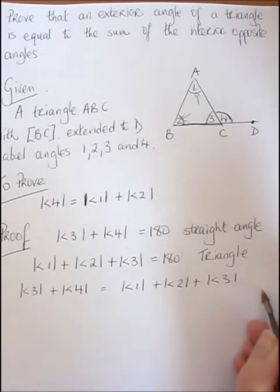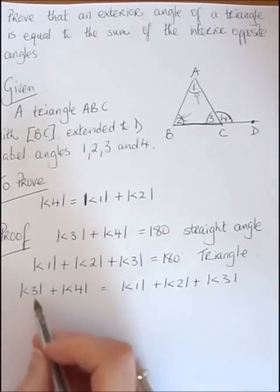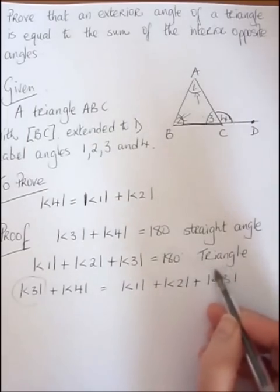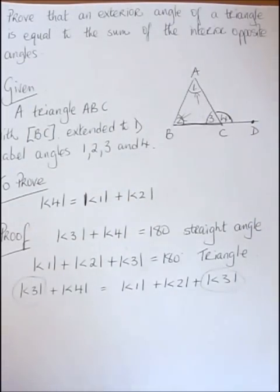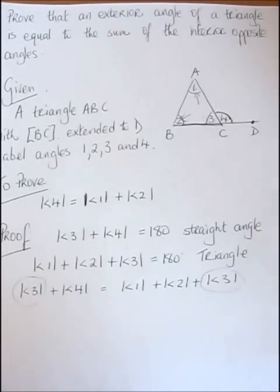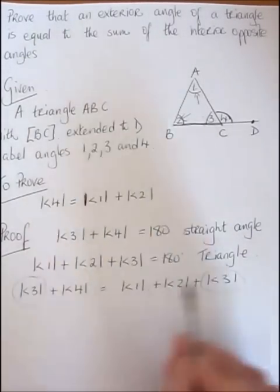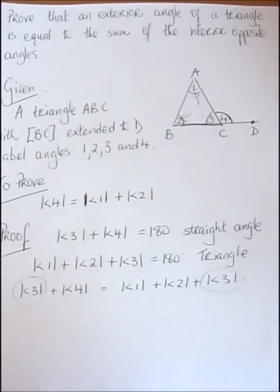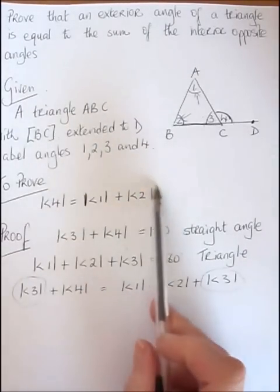So here we have an equation. Now we can see that we've got angle 3 on both sides. So with an equation, whatever I do to one side of the equation, as long as I do it to the other side, it keeps the equation balanced. So I'm going to subtract 3 from both sides because I'm aiming to get this result.